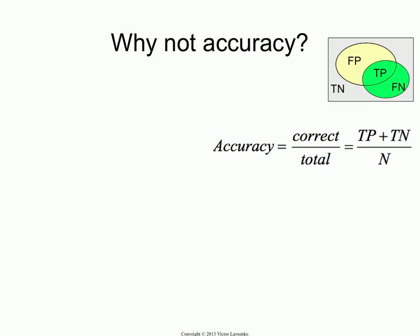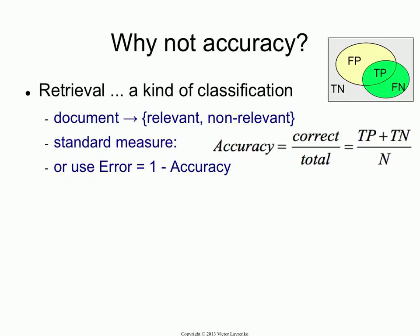So why don't we just use accuracy? You could define accuracy in terms of these numbers. Accuracy would be how many things did we correctly retrieve or not retrieve over the total number of things in your dataset. You would take the true positives — things that you retrieved correctly — plus the true negatives, documents that you didn't retrieve and were not relevant, divided by the total: true positives plus false positives plus false negatives plus true negatives. Or you could use the error, which is just 1 minus accuracy.